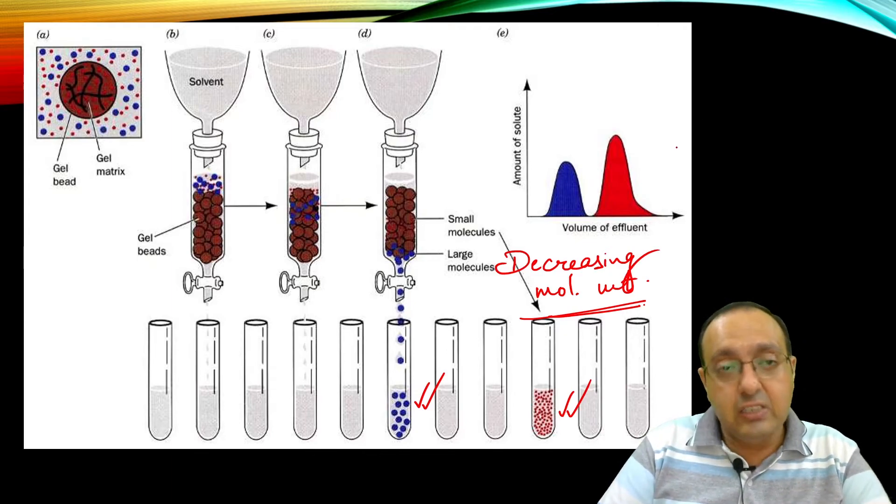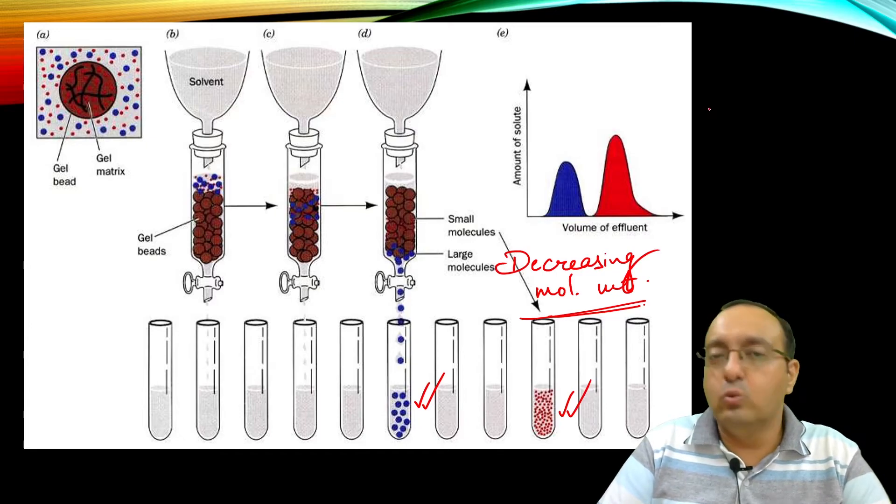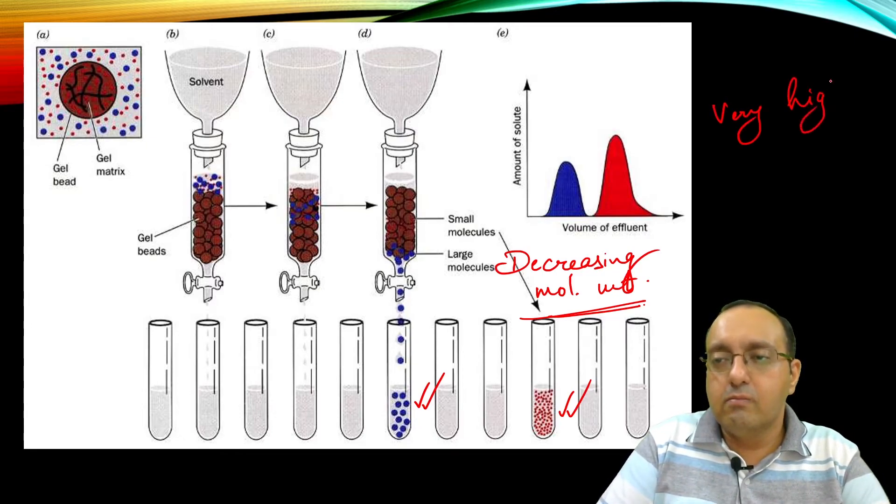One advantage of size exclusion chromatography is that it leads to very high recovery of activity. Proteins are seldom denatured—very rarely denatured.